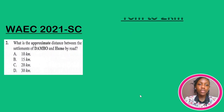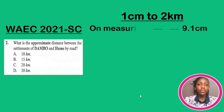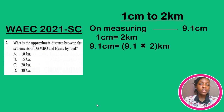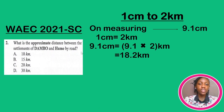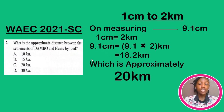Since our scale is one centimeter to two kilometers, on measuring we got the distance between Dambu and Hume by road as 9.1 centimeters. So, one centimeter equals two kilometers, therefore 9.1 centimeters equals 9.1 × 2 = 18.2 kilometers. This is the actual distance on the ground. After applying our scale, the actual distance is 18.2 kilometers, which is approximately 20 kilometers. Hence, the answer is option C — we didn't fall into the trap of approximating the map distance to 10 and picking A.